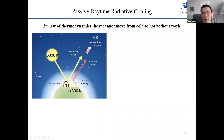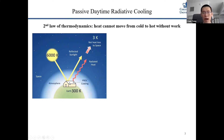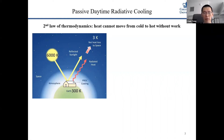The universe is at 3 Kelvin, and the surface of the earth can transfer heat to the cold sky by radiation. If a surface is highly reflective in the solar spectrum, it won't be heated by sunlight. And if it's also not heated by the sun and can transfer heat to the cold sky, it will cool spontaneously to below the ambient temperature.